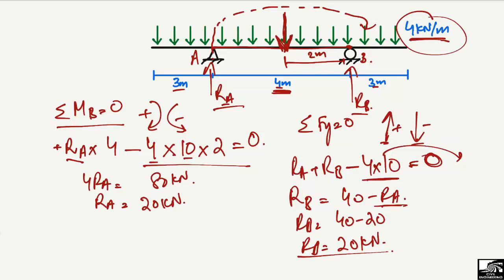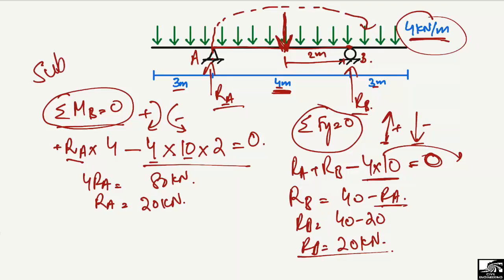So this is the second way to find out the support reactions using the equilibrium equations — summation of moments equal to zero and summation of vertical forces equal to zero. Hope you guys understand how to find the support reactions for an overhanging beam by two methods. Don't forget to subscribe to our channel for daily civil engineering videos. Thank you for watching.